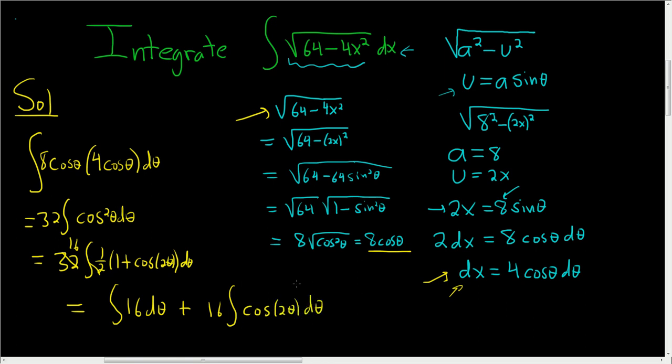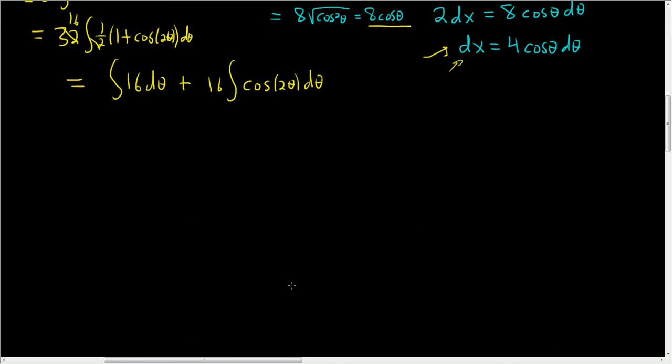Let's keep going. So when we integrate 16 d theta, we simply get 16 theta. And when we integrate cosine, well, the integral of cosine is sine. And we have a 2 here. So all we do is divide by the 2. It's just a shortcut. So it's 16 over 2 sine of 2 theta plus our constant. So this is 16 theta plus 8 sine 2 theta plus our constant.